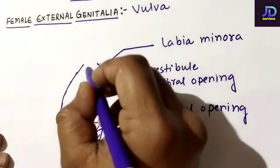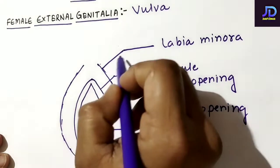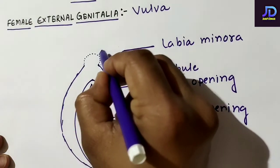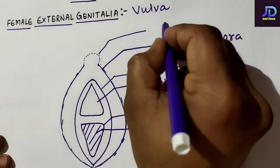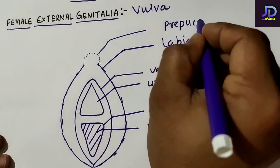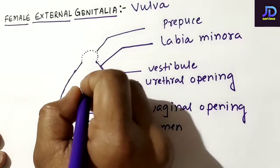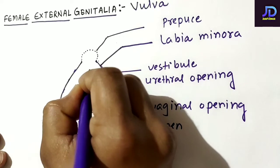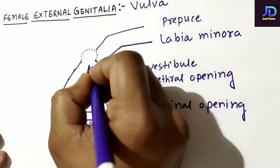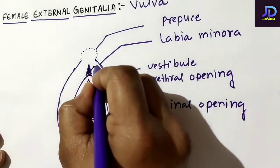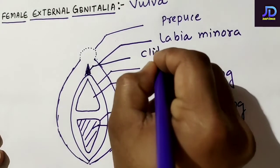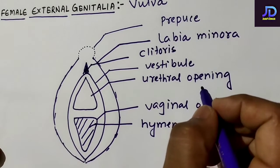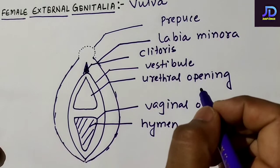On the top of the labia minora there is a loose fold of skin, and this loose fold of skin is known as prepuce. In the vestibular region there is a thin finger-like pointed structure which is covered by the prepuce, and this finger-like structure is known as clitoris, which is the most sensitive part in the female reproductive system.